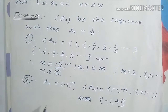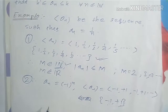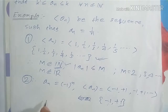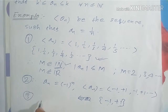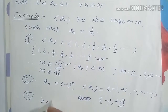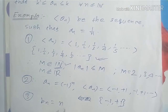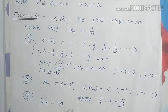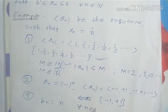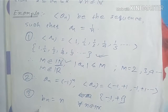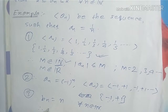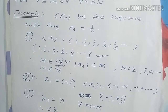For another example, suppose b_n = n for all n belonging to the natural numbers. In this case the sequence is of the form b_n = 1, 2, 3, 4, and so on.